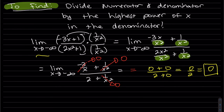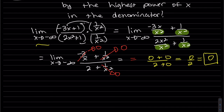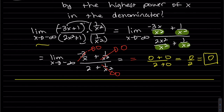When the denominator has a higher degree than the numerator, you'll generally get a zero horizontal asymptote as your end behavior.